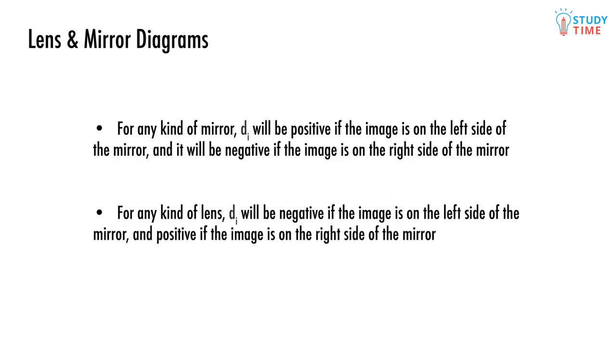For example, there's a few rules you need to know. For any kind of mirror, d_i will be positive if the image is on the left side of the mirror, and it will be negative if the image is on the right side. For any kind of lens, d_i will be negative if the image is on the left side of the lens, and positive if it's on the right.